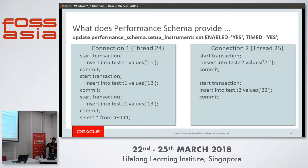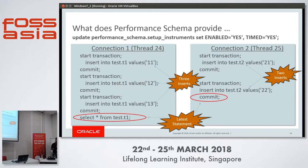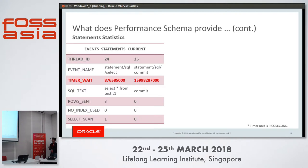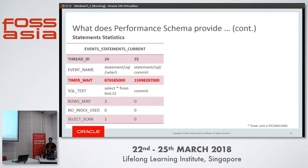In Performance Schema we have a table events_statements_current, which gives the statistics of the last or currently executing statement on any thread. If I query this table, I see thread ID 24 executed a SELECT statement — the text was SELECT * FROM test.T1 — how many rows were sent, that it did a full table scan, and the time taken. Similarly for thread ID 25, the last statement was a COMMIT, with its corresponding time taken. So with this table I get the information of the last statement executed on each thread.